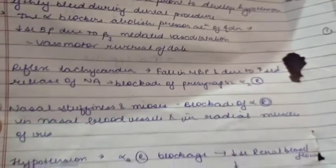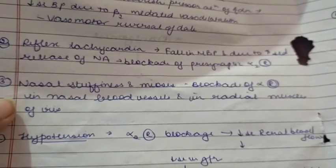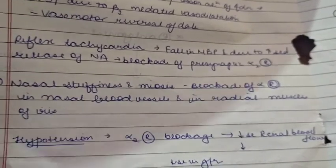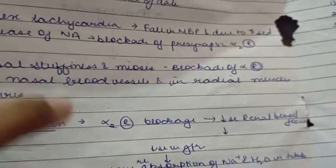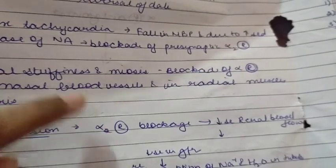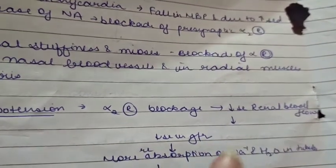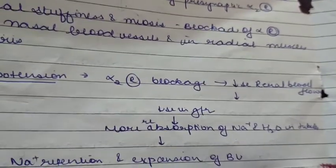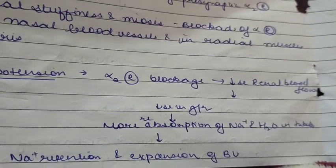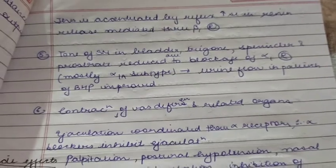There is also nasal stuffiness and miosis due to blockade of alpha receptors in nasal blood vessels and in the radial muscles of the iris. Hypotension occurs via alpha-2 receptor blockage. There will also be a decrease in renal blood flow and glomerular filtration rate, leading to more reabsorption of sodium and water in the tubules, causing retention and expansion contributing to hypertension, further increased by reflex release of renin.